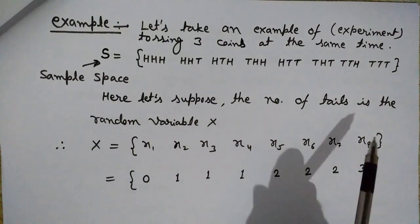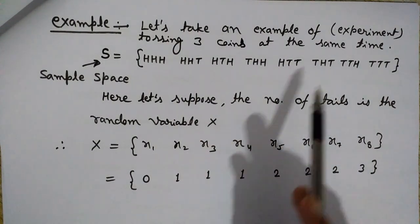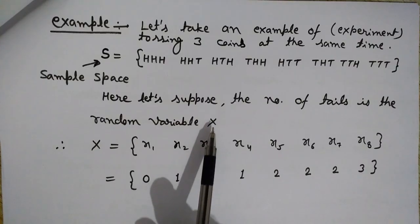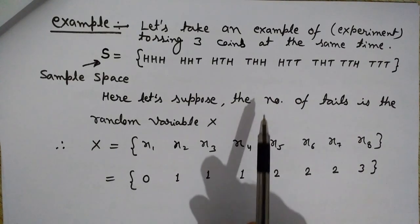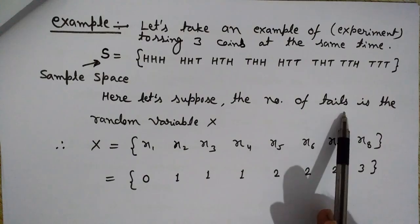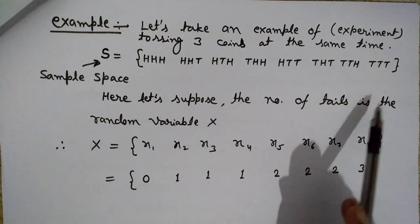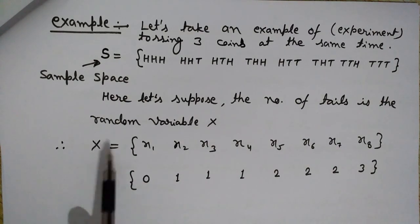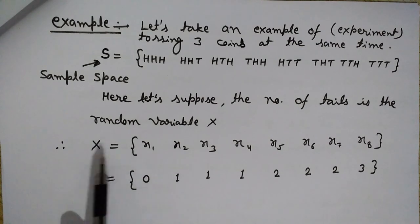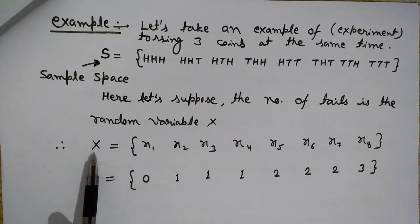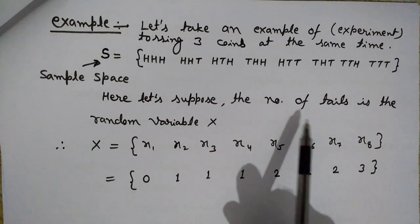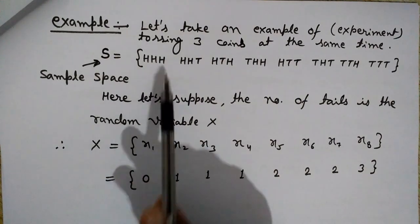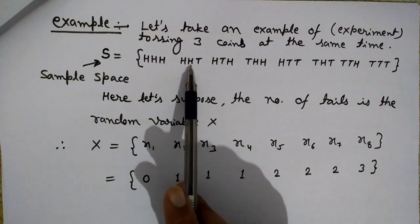Now, what is a random variable? We take some values from this sample space. Let's suppose this variable x denotes just the number of tails in this experiment. So we represent this random variable by capital X. Please note that random variables are represented by capital letters.